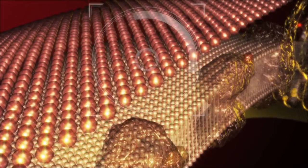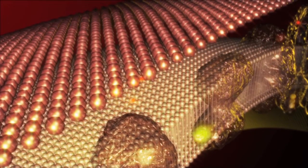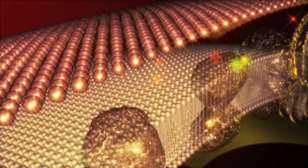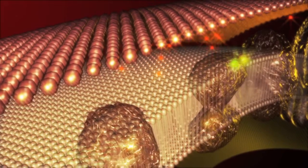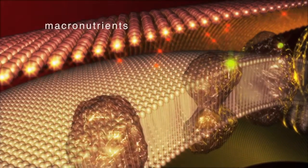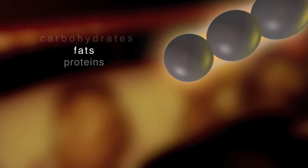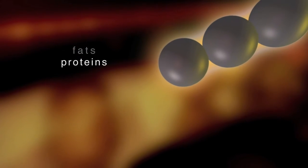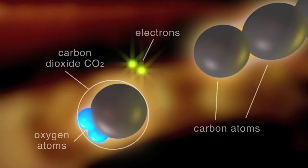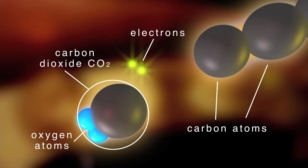Let's now move inside the mitochondria so we can see how oxygen is used to produce energy. Macronutrients such as carbohydrates, fats, and proteins are oxidised by a series of biochemical reactions until they are broken down to CO2.